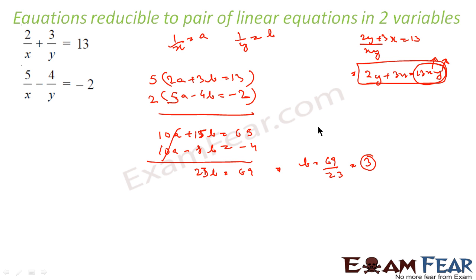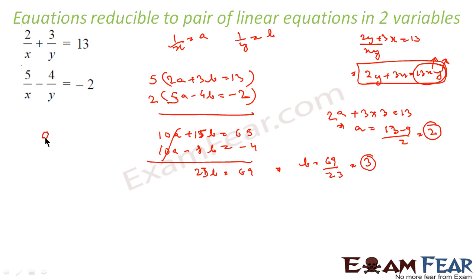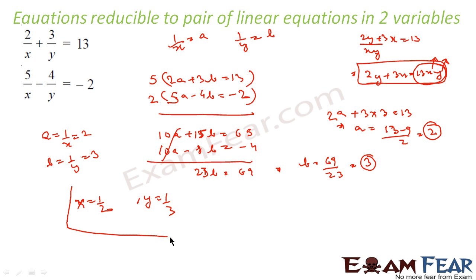Similarly, I can find a. Substituting b = 3 into 2a + 3b = 13: 2a + 9 = 13, so a = 4/2 = 2. Now, since a = 1/x = 2, we get x = 1/2. And since b = 1/y = 3, we get y = 1/3. Very simple — we have reduced this to a pair of linear equations, solved it, and got the answer.